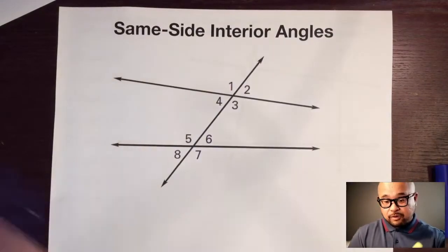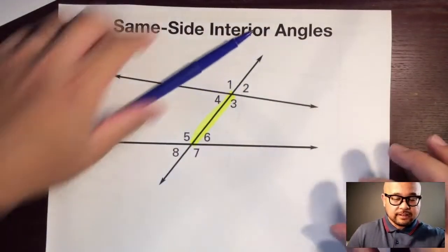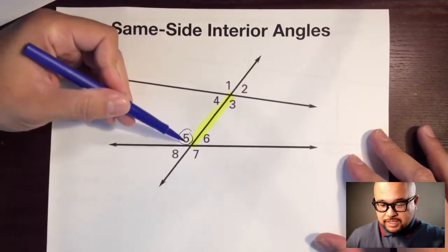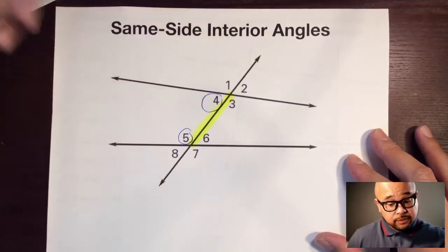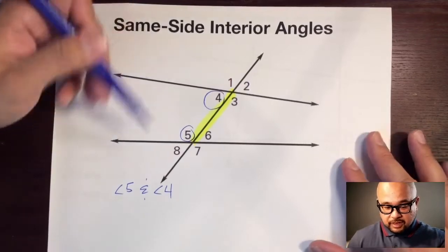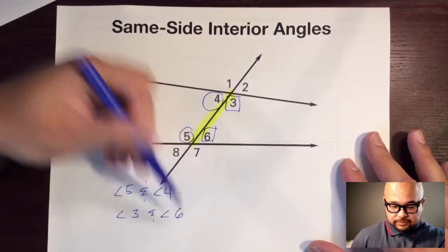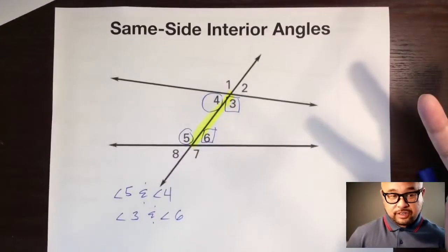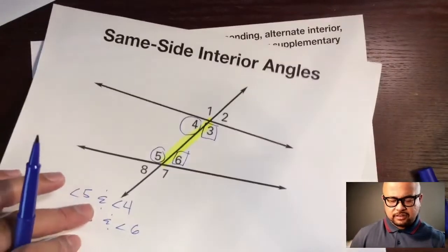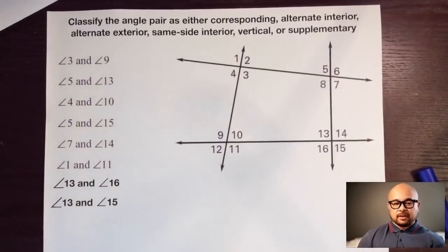Next: same-side interior angles. I'm going to highlight just the interior parts of the transversal. Same side — we don't go on the alternate side. Starting with angle five, what is on the same side of the transversal and still in the interior? That would be angle four. So angle five and angle four are same-side interior angles. The other pair: angle three and angle six are both on the same side and in the interior. So make sure you know these four types of angles formed by transversals.